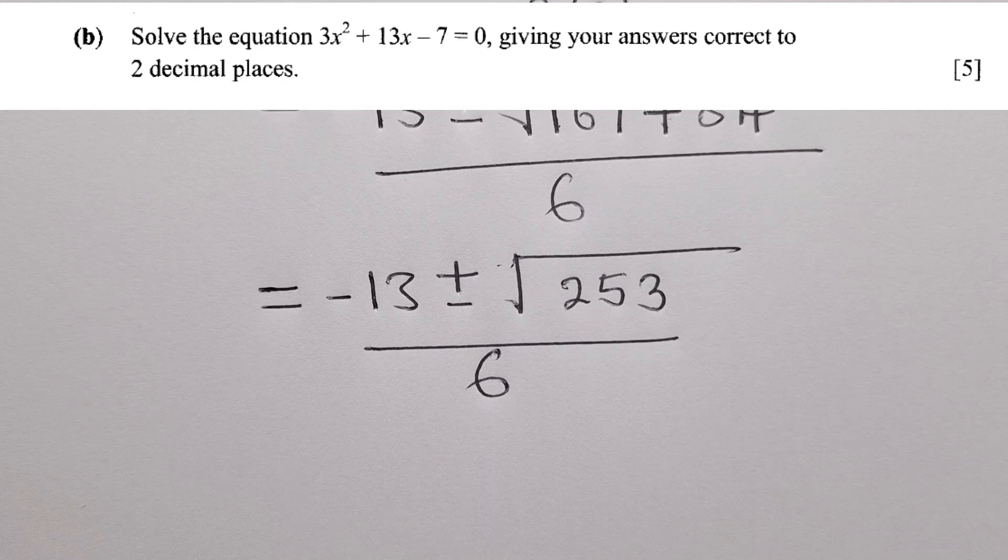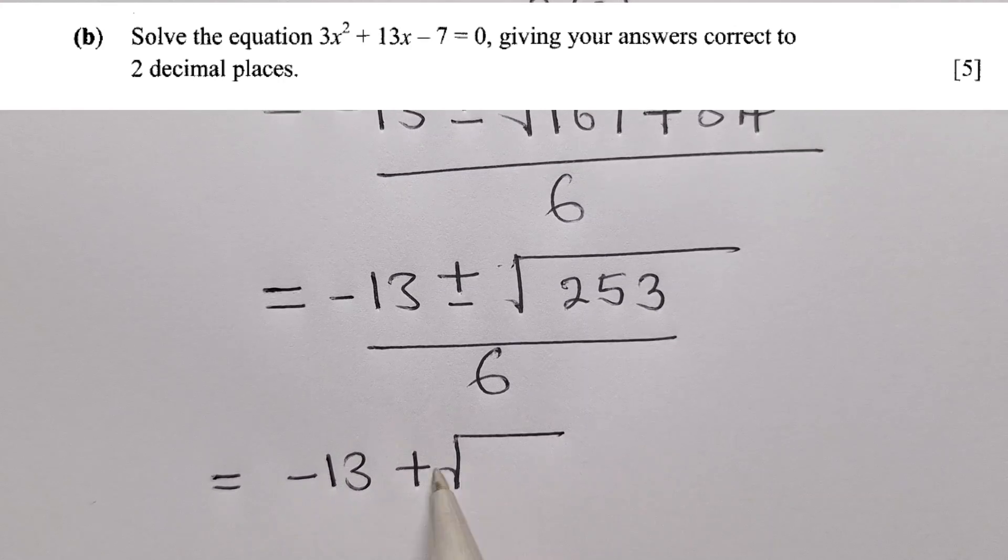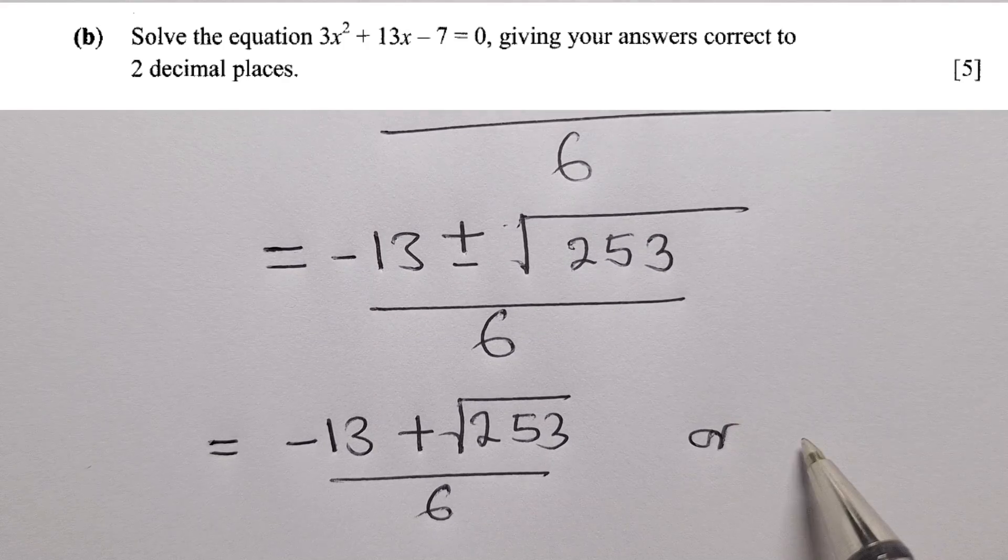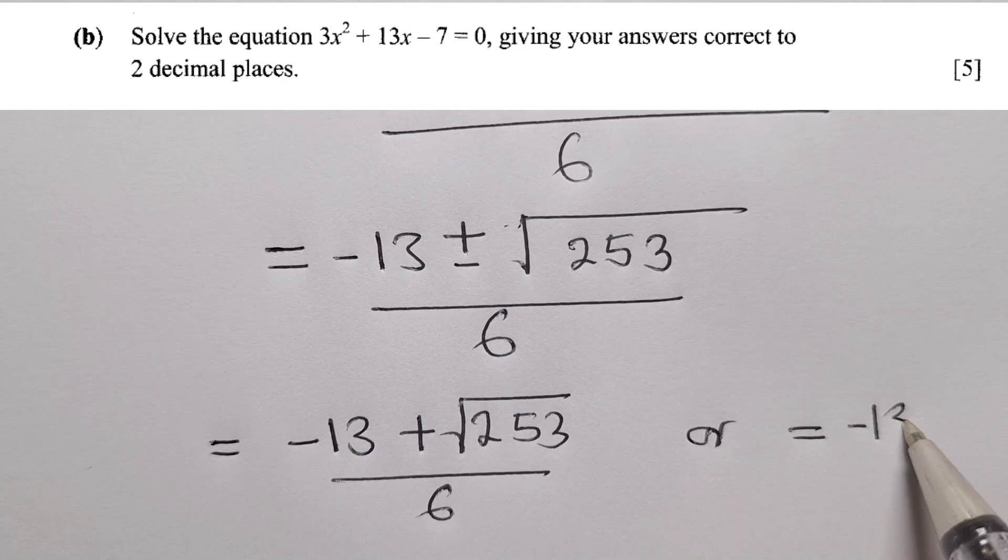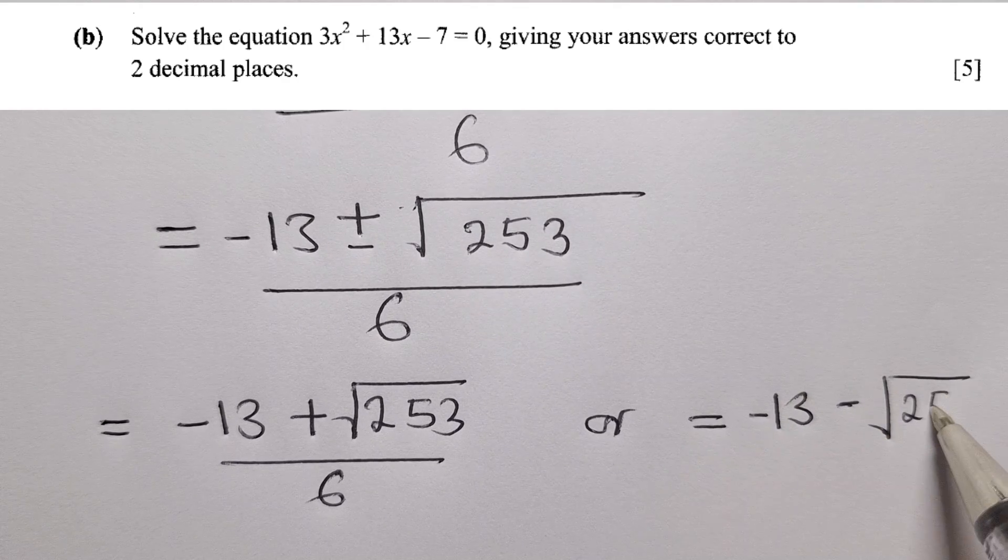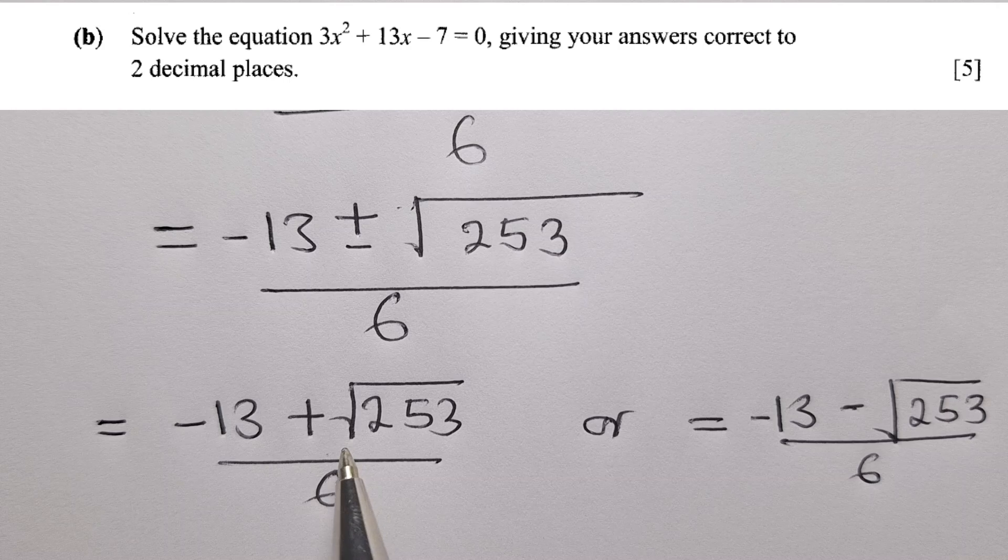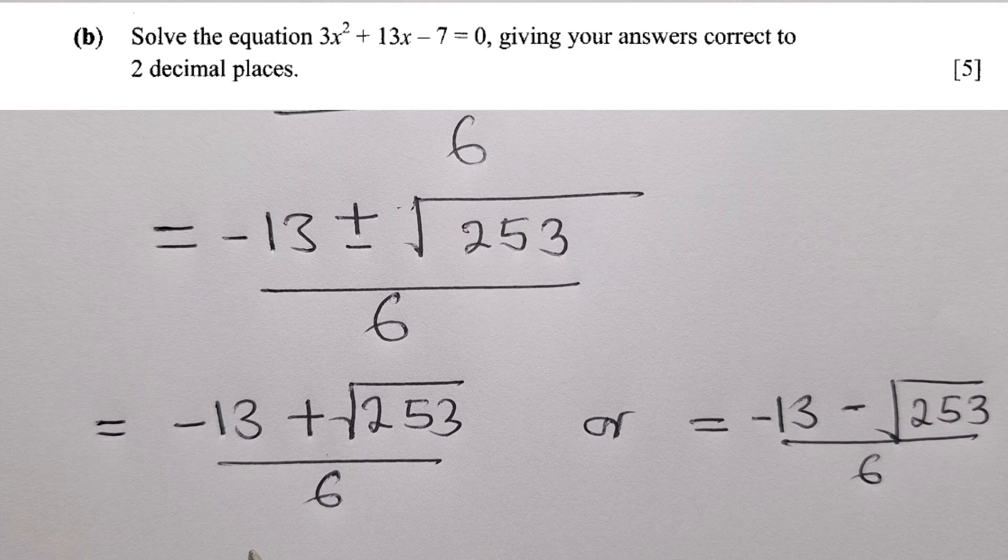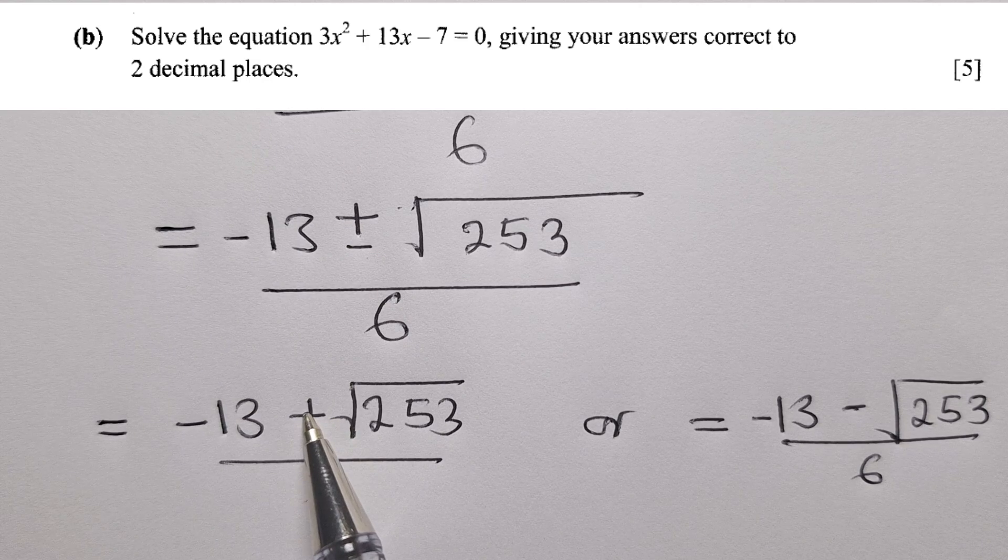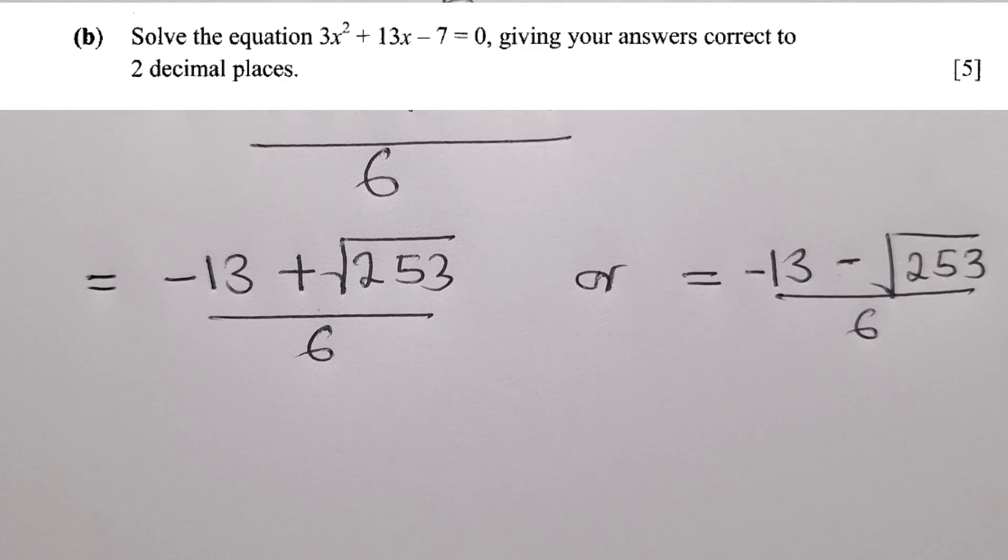So from this, or at this point, is where we need to say negative 13, plus root over 253 over 6. And then we say or equal to negative 13, minus root of 253 over 6. So the reason why we are having these two solutions, it's because this is a quadratic equation. And it's supposed to give us two solutions. Because here we've got a positive and a negative. So this is for the positive. This one is for the negative. So we just simplify further, not leaving our answer here.